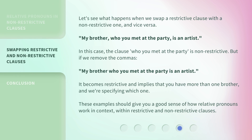Let's see what happens when we swap a restrictive clause with a non-restrictive one, and vice versa. 'My brother, who you met at the party, is an artist.' In this case, the clause 'who you met at the party' is non-restrictive. But if we remove the commas — 'My brother who you met at the party is an artist' — it becomes restrictive and implies that you have more than one brother, and we're specifying which one. These examples should give you a good sense of how relative pronouns work in context, within restrictive and non-restrictive clauses.